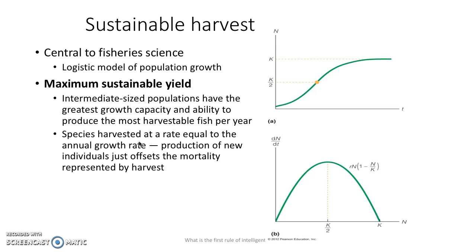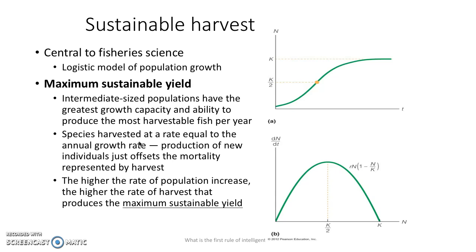Sustainable harvest and maximum sustainable yield try to shoot for fish populations at that maximum growth — that top exponential growth. Species are harvested at a rate equal to that annual growth rate. Basically, the production of new individuals just offsets the mortality represented by the harvest. You have to have young and old to keep a healthy population. A higher rate of population increase means you can harvest faster — that's the idea of maximum sustainable yield.